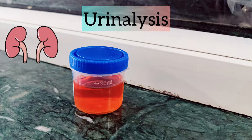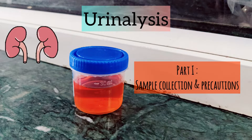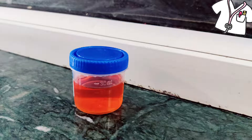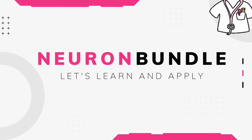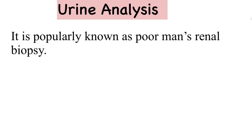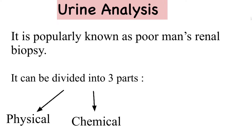Hello friends, in the coming few videos we are going to talk about urine analysis. In the first part we are going to talk about sample collection and precautions. It is popularly known as poor man's renal biopsy or liquid biopsy. It can be divided into three parts: physical examination, chemical examination and microscopy of the urine.